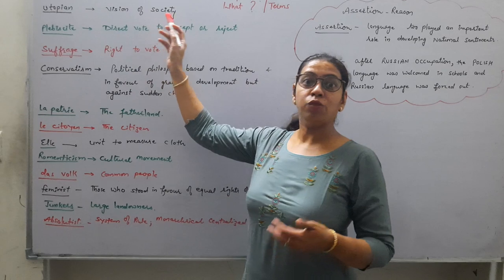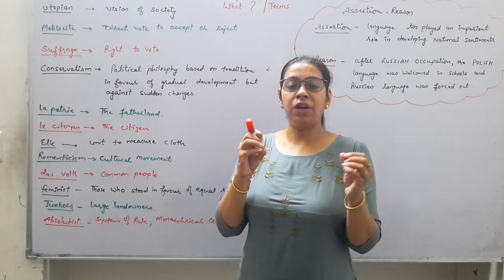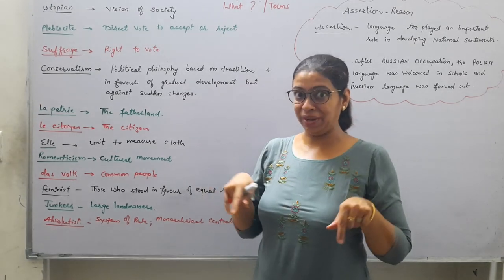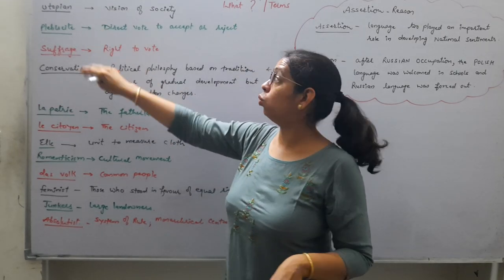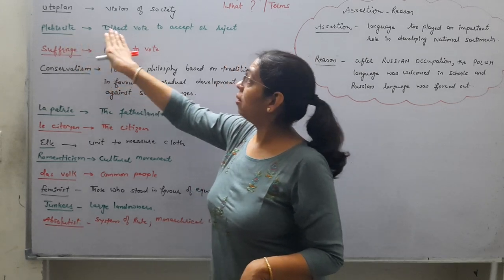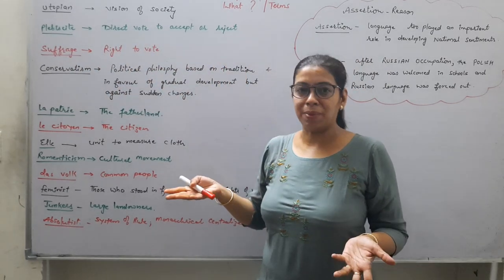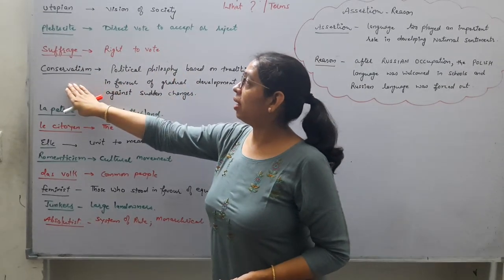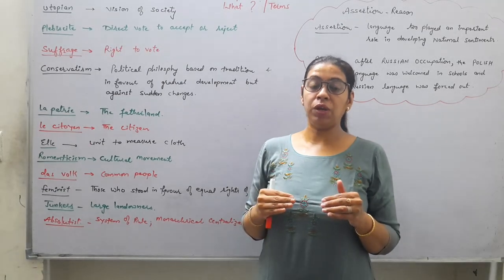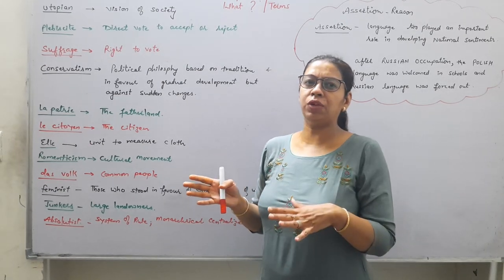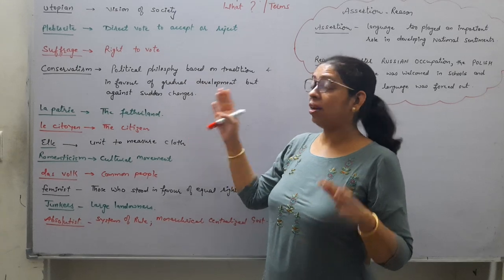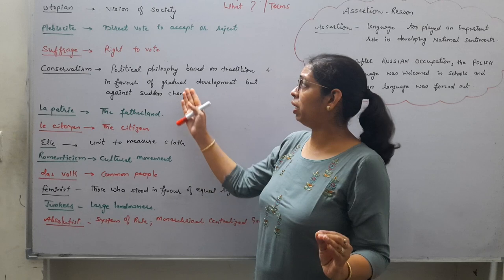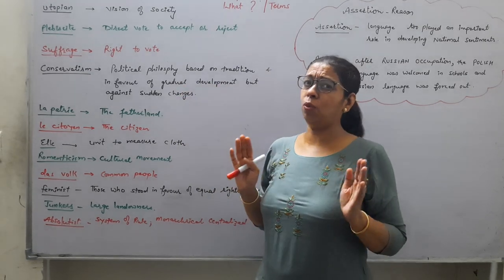Utopia — a vision of society, because Friedrich actually visualized society in his painting. Plebiscite — a direct vote to accept or reject something, like a referendum. Suffrage — the right to vote. Conservatism — a political philosophy based on traditional views where they do not favor sudden changes; if changes occur, they should be gradual and slow.